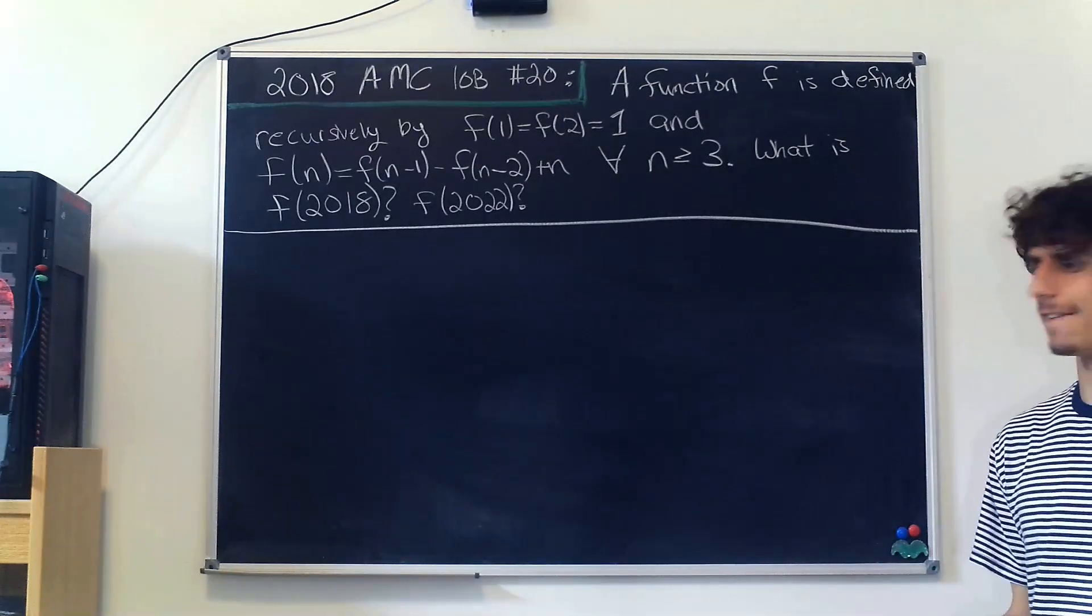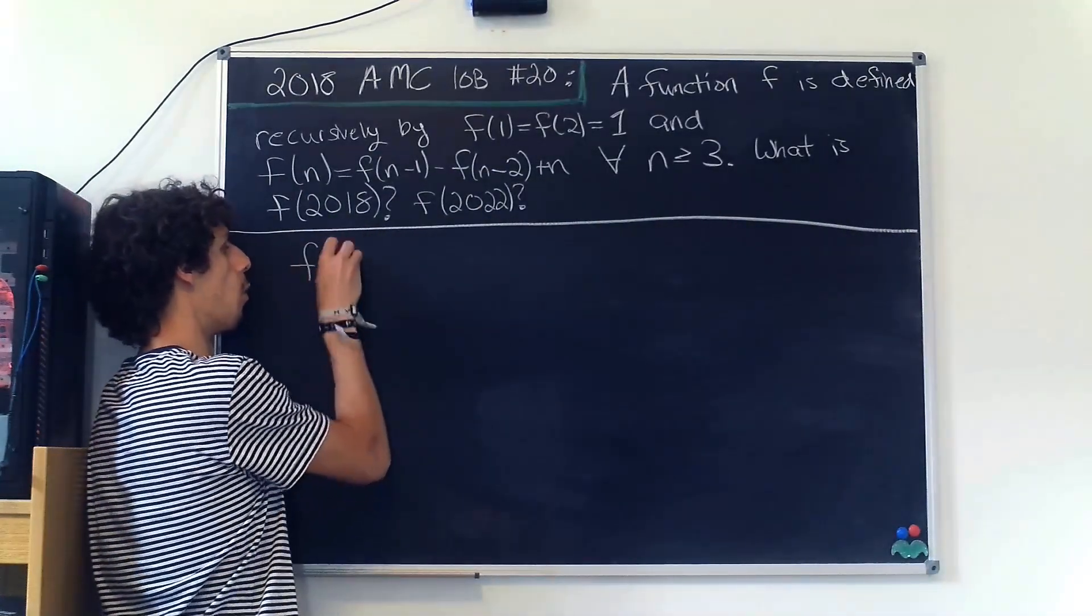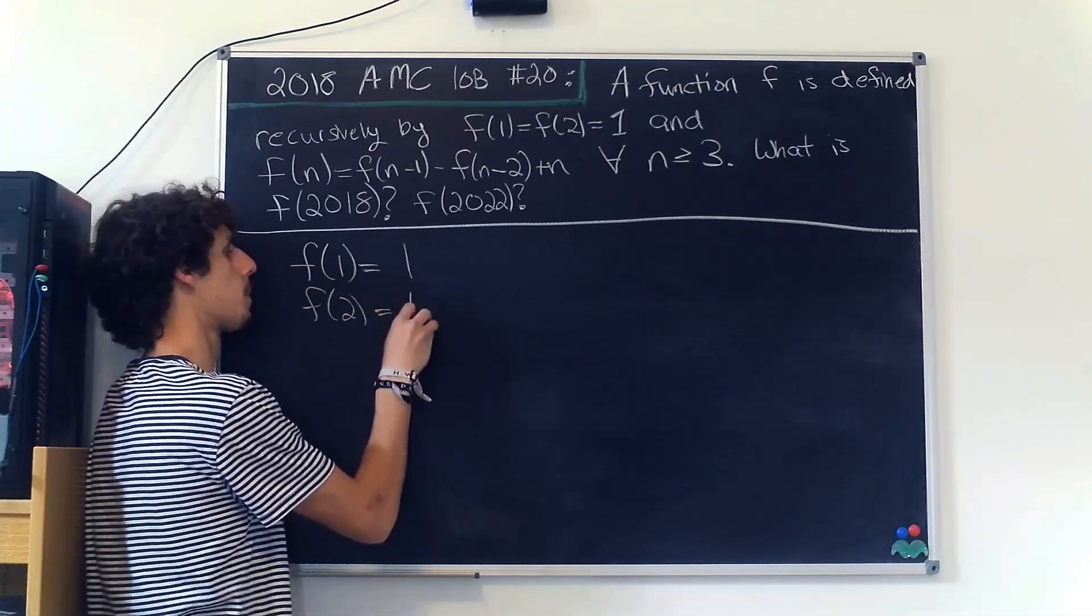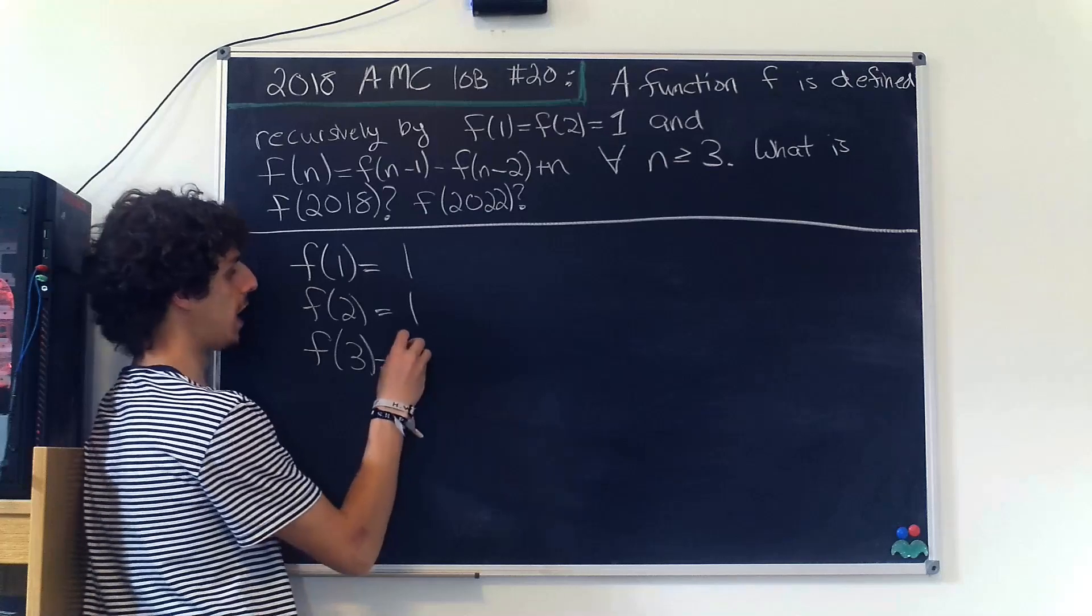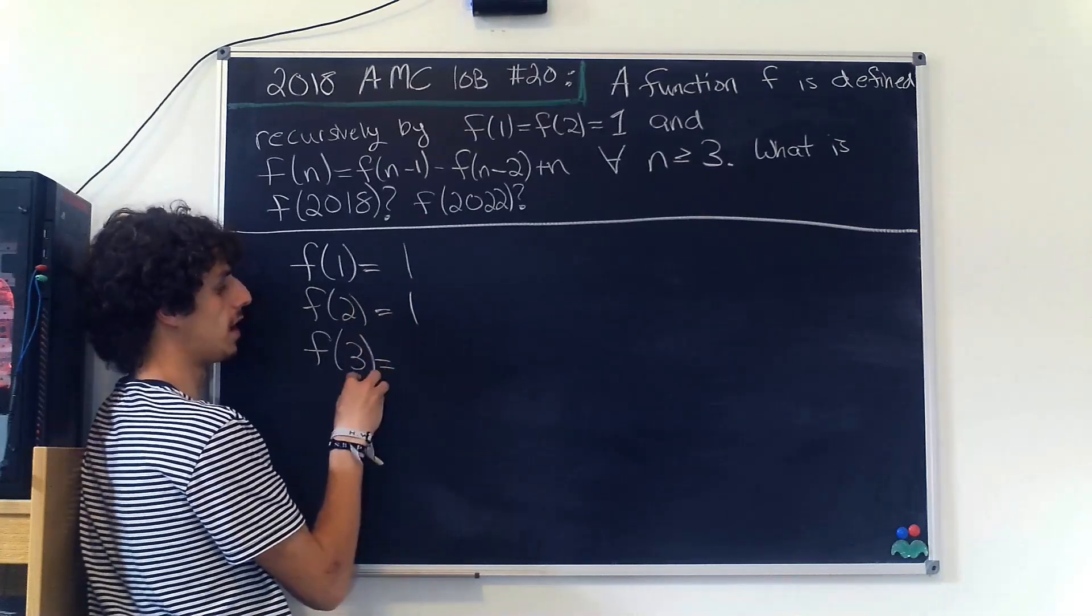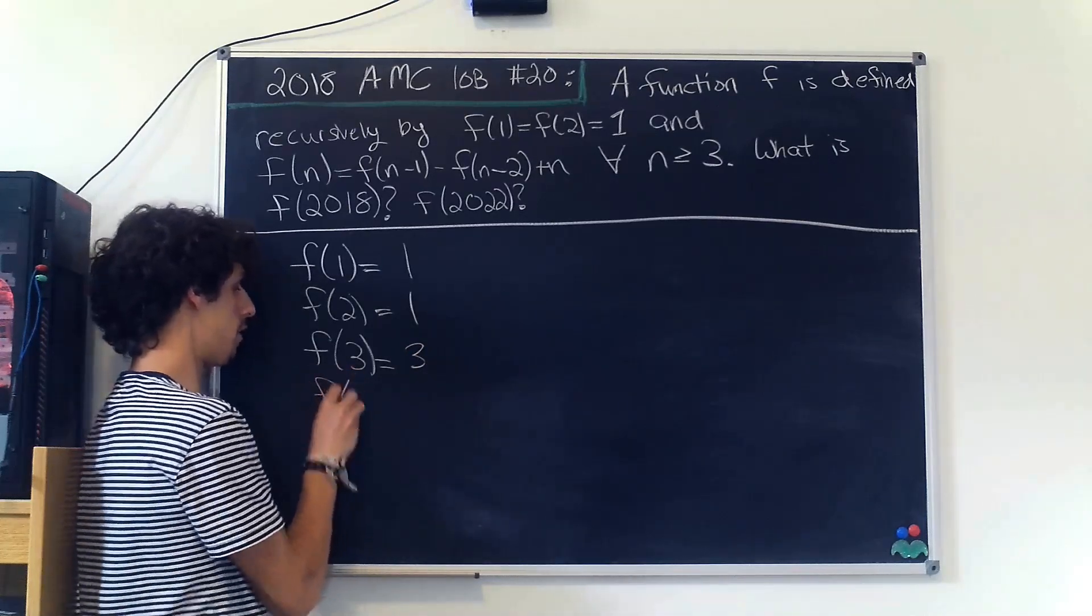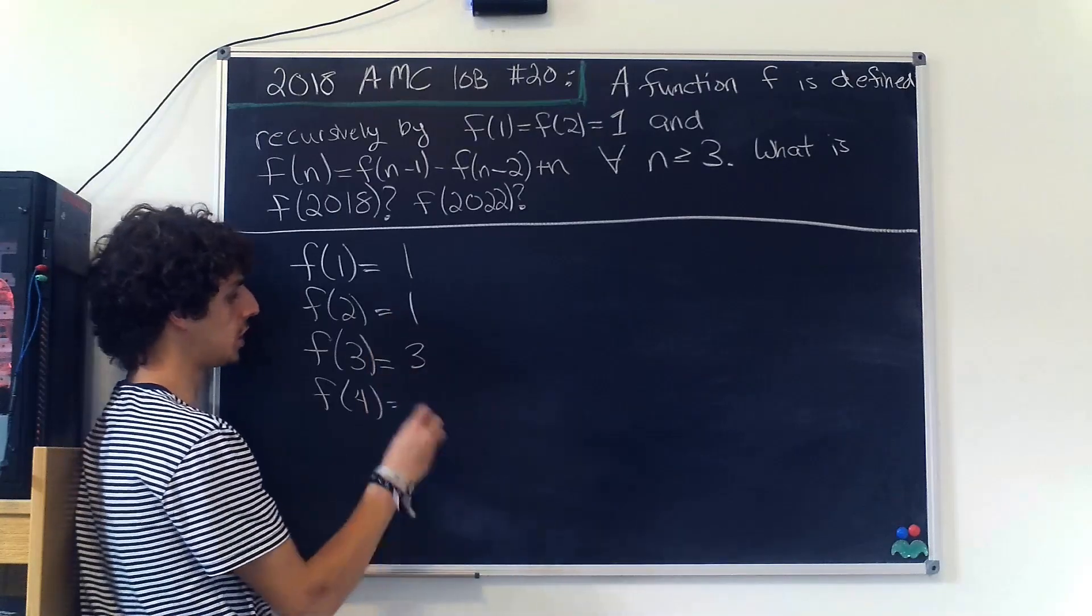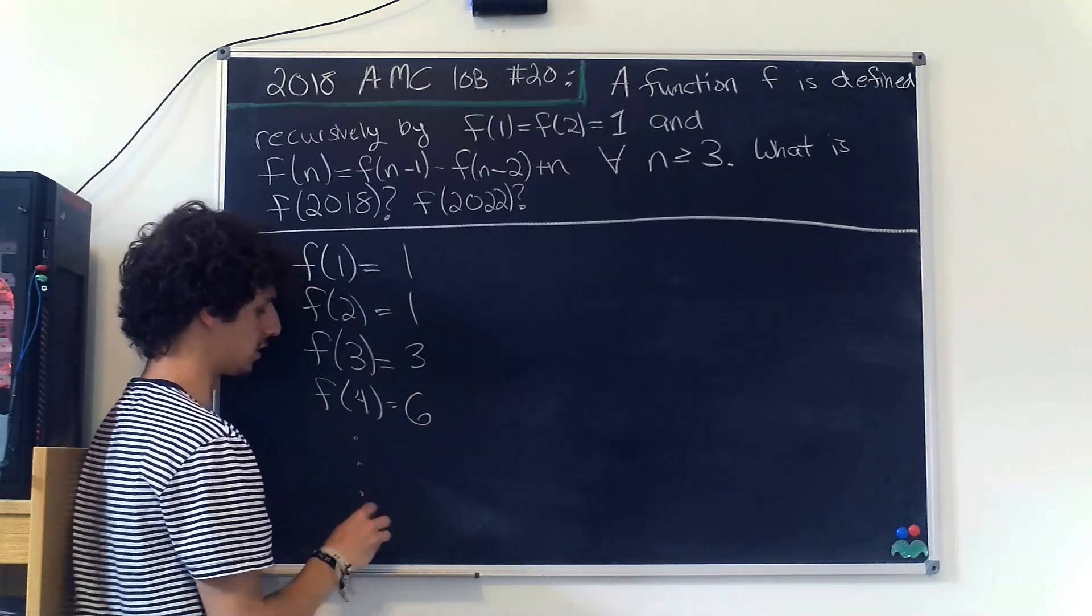Okay, first let's go ahead and get a feel for what's going on here. So f(1) is 1, f(2) is 1, f(3) is equal to f(2) minus f(1), but that's 0 plus 3 itself, so that's 3. f(4) is equal to 3 minus 1 which is 2 plus 4 which is 6, and so on and so forth.